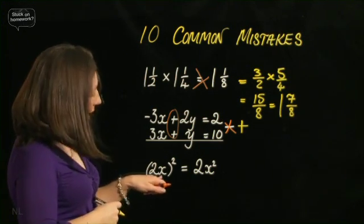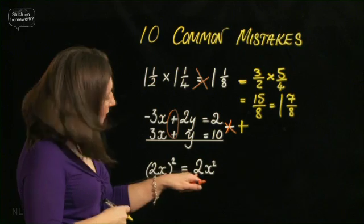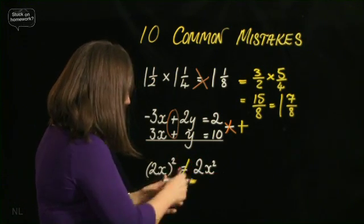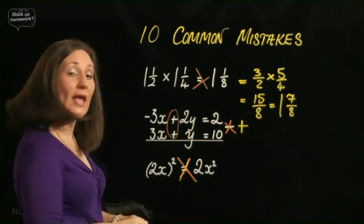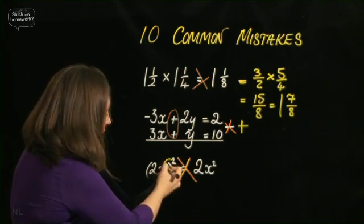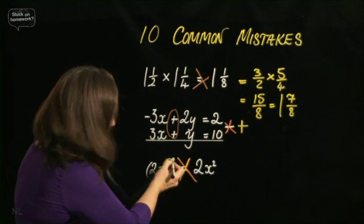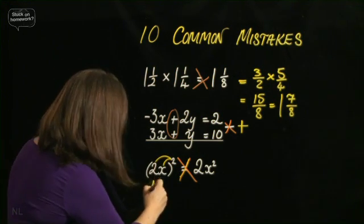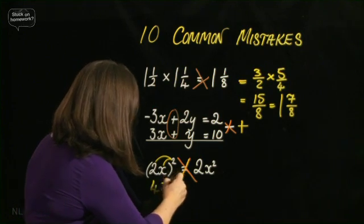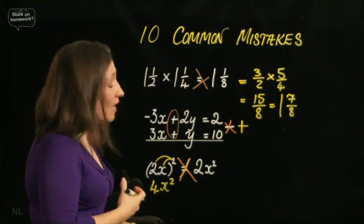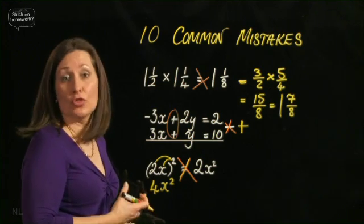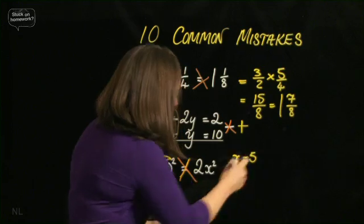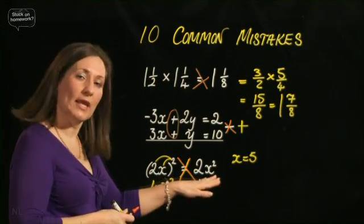And the last one. 2x all squared. Is it 2x squared? No, it's not. Absolutely not again. What we've got here is x squared, 2 squared. It should be 4x squared. Now another common mistake here is if I wanted to put a substituted value through it. For example, let's say x is 5.